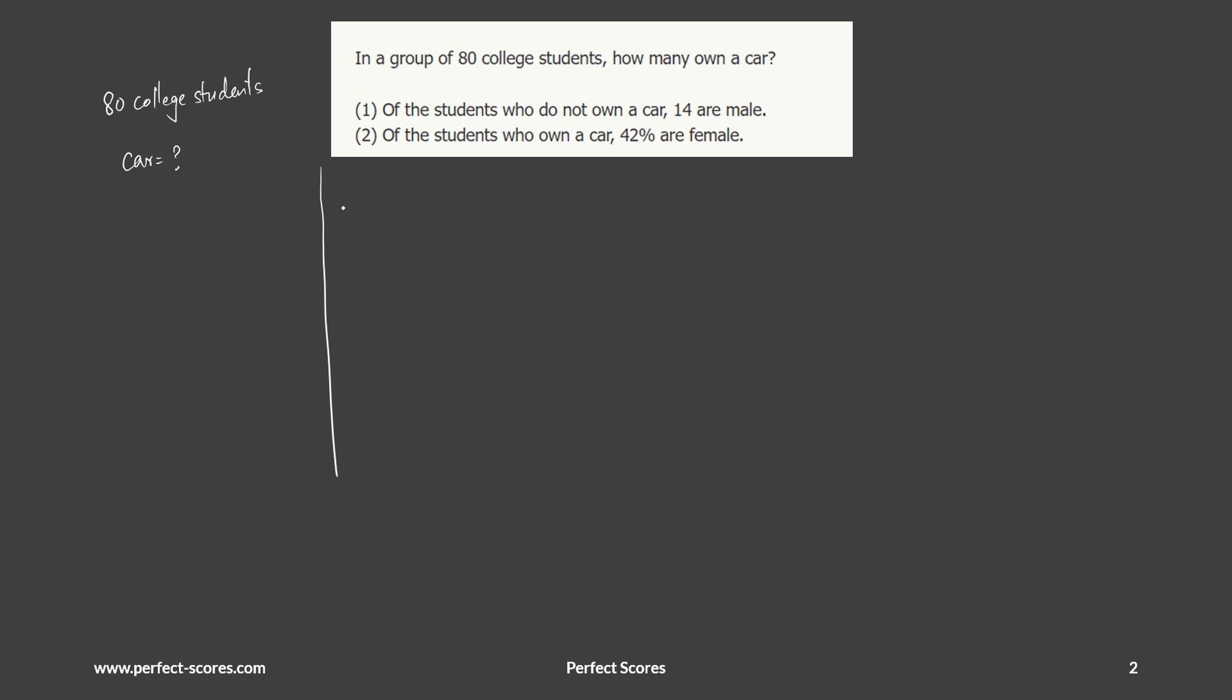Let's move on to statement one. It says that of the students who do not own a car, 14 are male. We can clearly see that this is a two by two matrix we have to draw here because it's grouping students into male and female and people who own a car and who do not own a car.